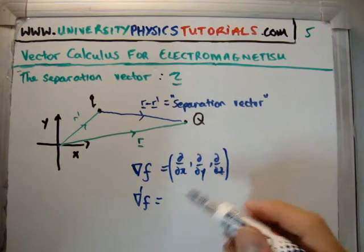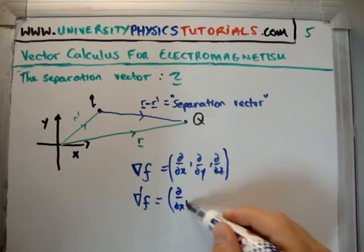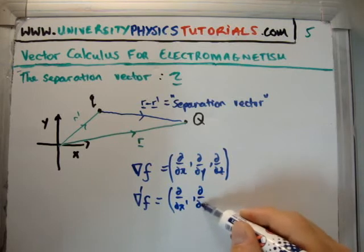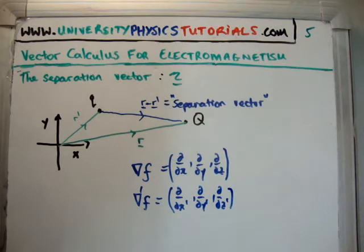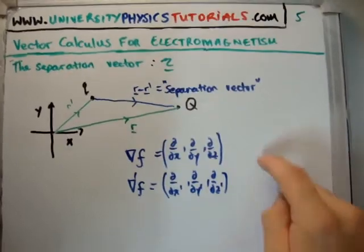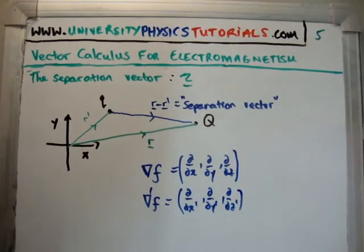But, we'll say, the Nabla prime is going to be del, del x prime, del, del y prime, del, del z prime. What's the difference? Well, these are with respect to the prime variables, or the sources. These are the sources. And this is with respect to the detector. So there is a difference between the primed variables and the unprimed variables.